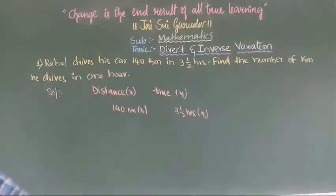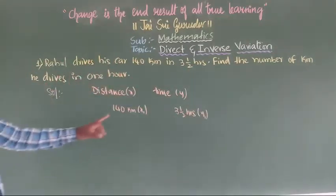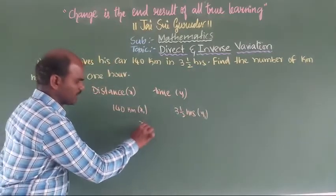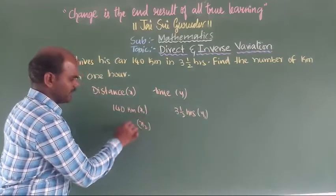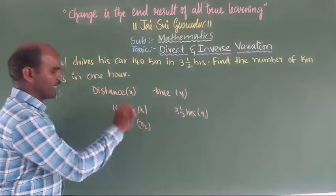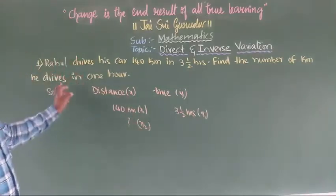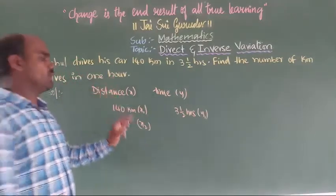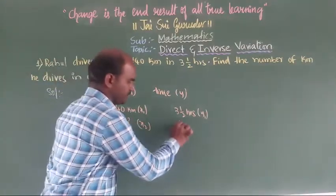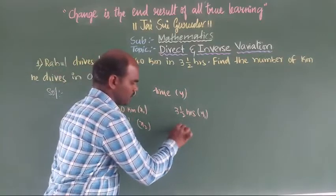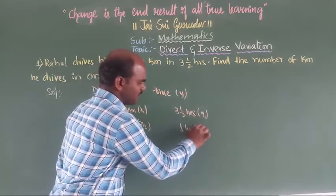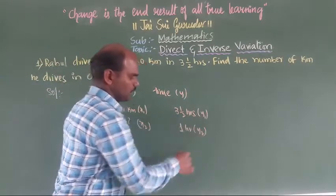We need to find the number of kilometers, so x2 is question mark. And for that case, the time is 1 hour, so y2 is 1.